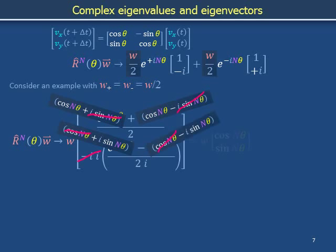The two cosines in the top component, divided by 2, give one copy of cosine, and the two sines in the bottom component, divided by 2, and with i's cancelling out, give sine.